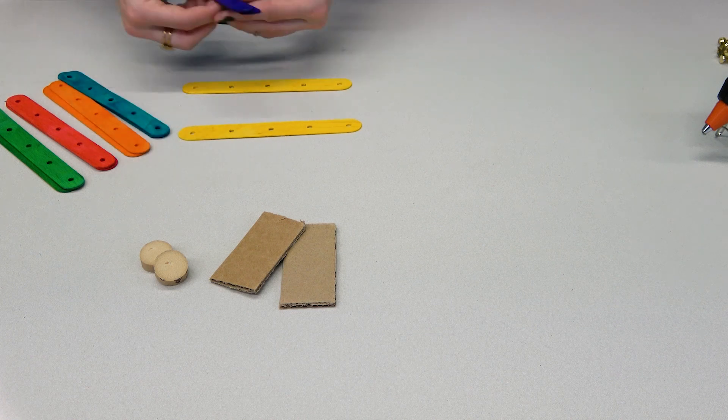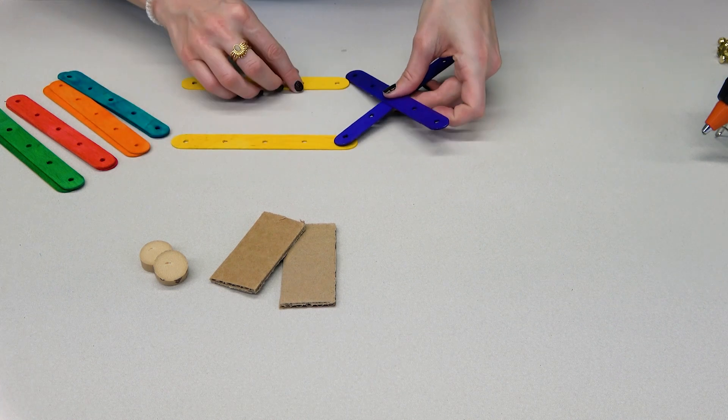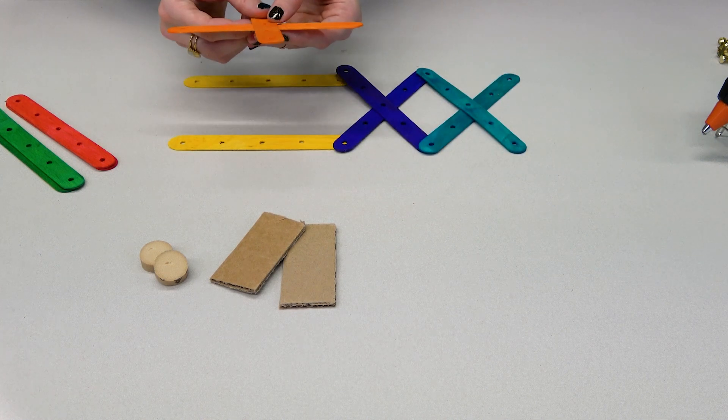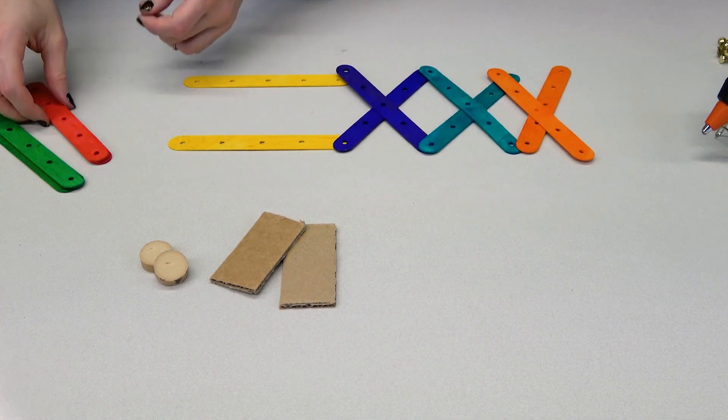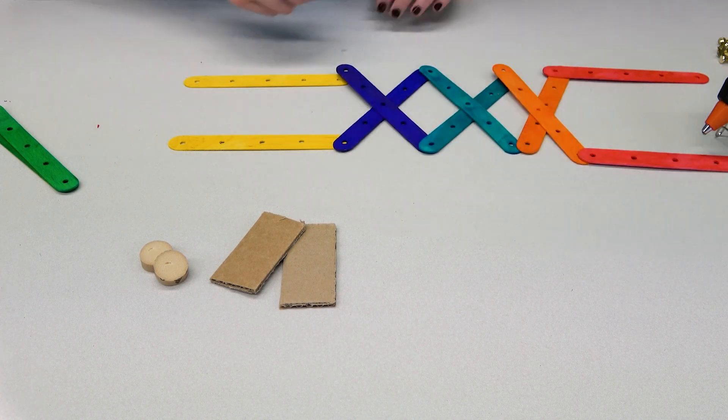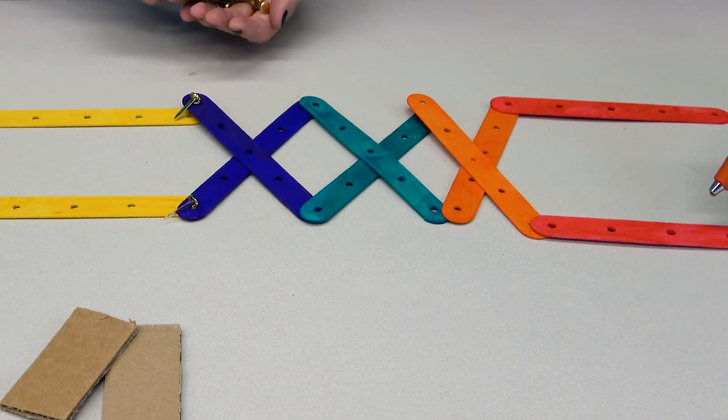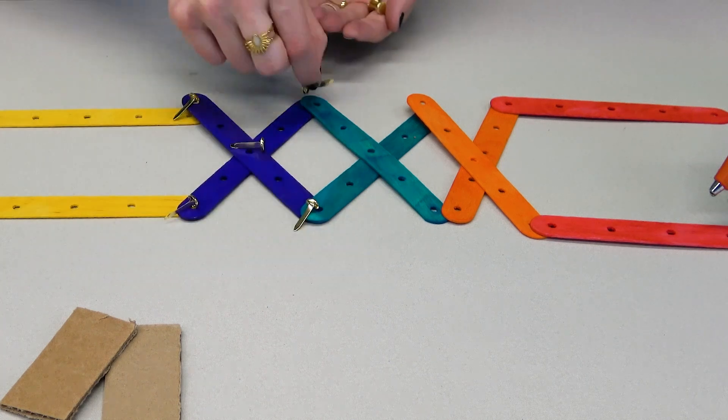Lay out the popsicle sticks that will form your robotic arm. You need handles, three crosses in the middle, and the pliers at the end. Let's pin it. We need pins for the connections between two sticks and in the middle of each cross.